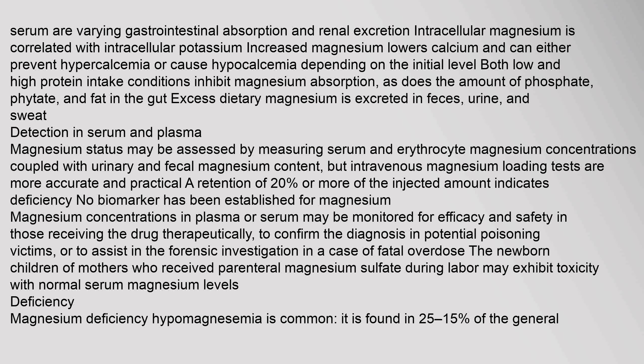Serum magnesium levels vary with gastrointestinal absorption and renal excretion. Intracellular magnesium is correlated with intracellular potassium. Increased magnesium lowers calcium and can either prevent hypercalcemia or cause hypocalcemia depending on the initial level. Both low and high protein intake conditions inhibit magnesium absorption, as does the amount of phosphate, phytate, and fat in the gut. Excess dietary magnesium is excreted in feces, urine, and sweat.